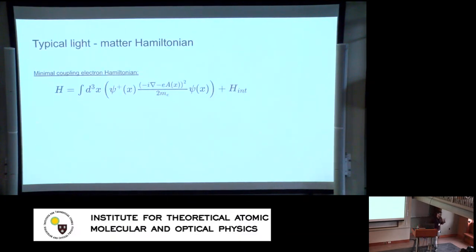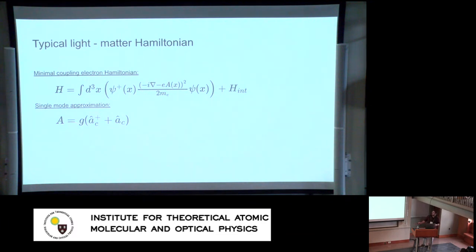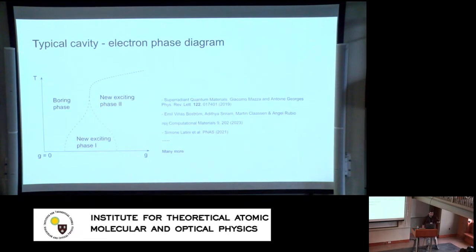To get everyone on the same page: we usually describe electrons coupled to cavities by writing down the minimal coupling electron Hamiltonian, where light couples to electrons by shifting the momentum by the vector potential, plus the rest of the electron Hamiltonian. We then do a single-mode approximation, approximating the vector potential by a single cavity mode assumed constant throughout the entire material, and write down the combined Hamiltonian of the electron plus the cavity.